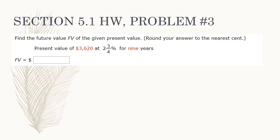Let's look at a problem from the homework where we find the future value of a loan or investment. It says: find the future value FV of the given present value — remember, present value means principal. Round your answer to the nearest cent, which means two decimal places. You have a present value of $3,620 at two and three-quarters percent interest for nine years. Since we don't know the interest I, we use the formula: FV equals P times (1 plus R times T).